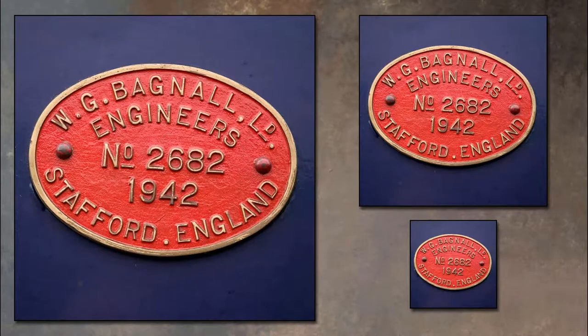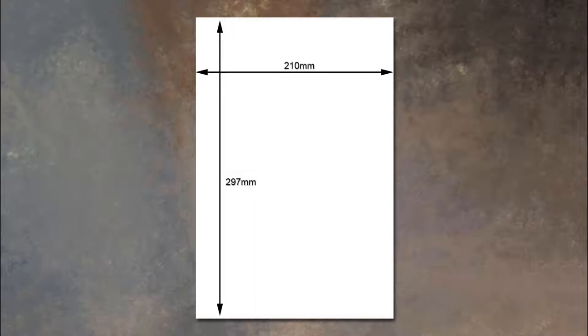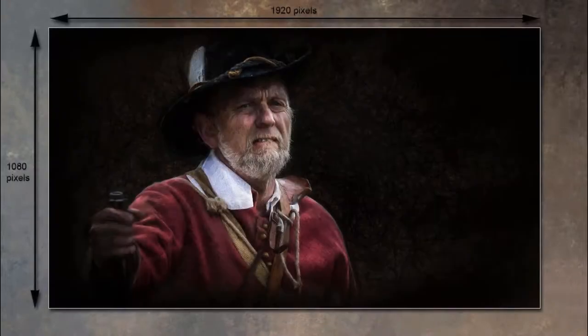Outside of photography, we may see on a pack of printing paper that it comes in A4 format, with the length and width in inches or millimeters. In photographic circles, we tend to hear the term aspect ratio, with the size written in pixels — such as 1920 by 1080. It's much the same thing as the paper size.